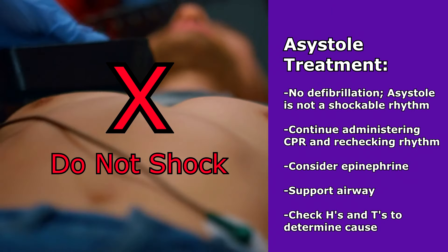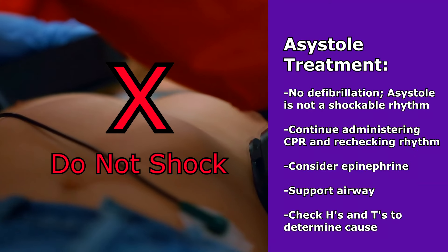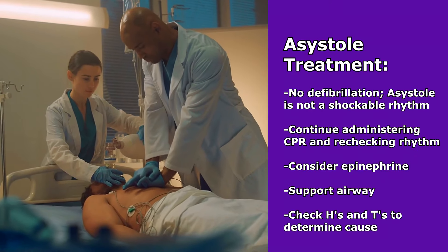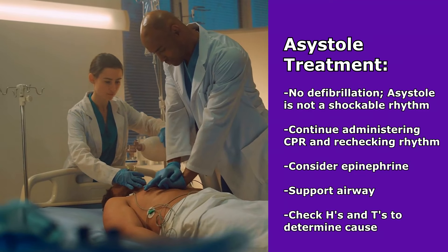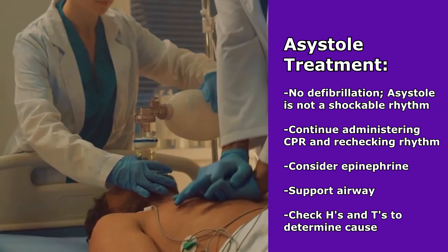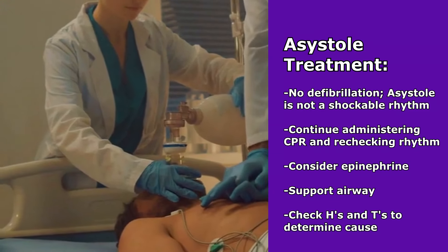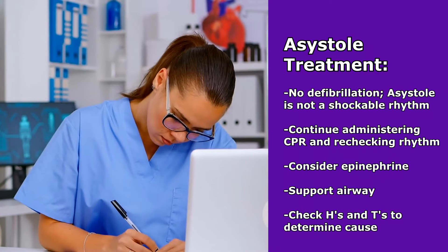Then you want to check the rhythm per ACLS's recommendation. Asystole is not a shockable rhythm, so we cannot defibrillate this rhythm. You want to continue doing CPR, doing rhythm checks per protocol. Some things that can be given - you can administer epinephrine, you want to support that airway. And of course, as you're continuing CPR and rhythm checks, you're going to be checking those H's and T's, thinking about what could be causing this.